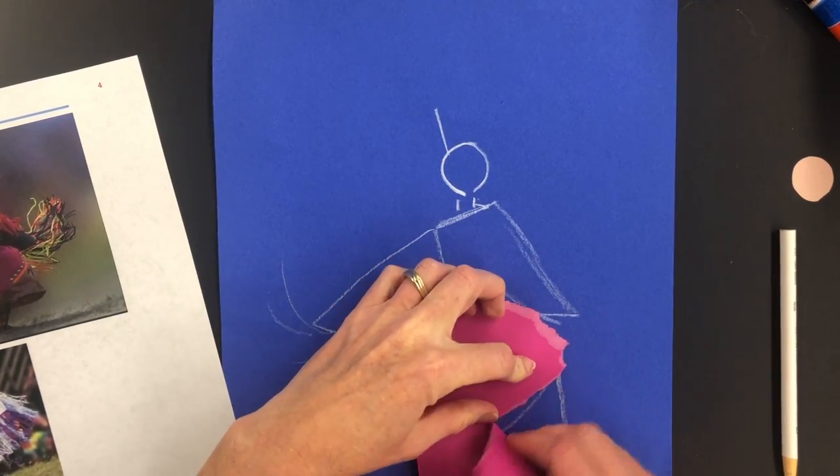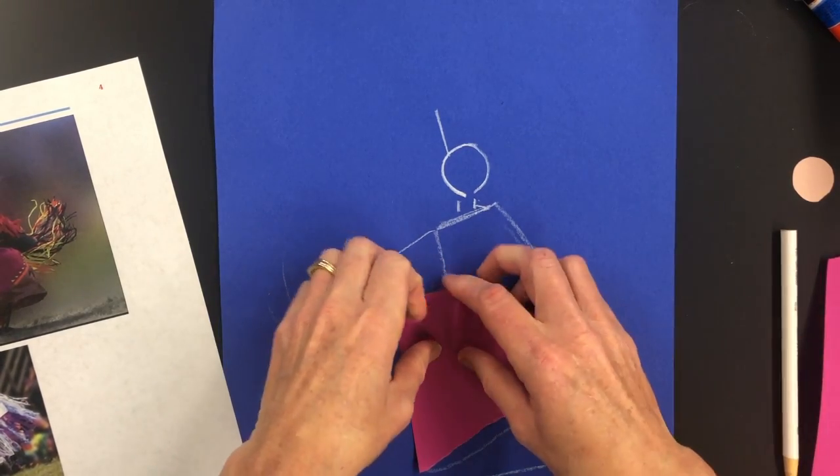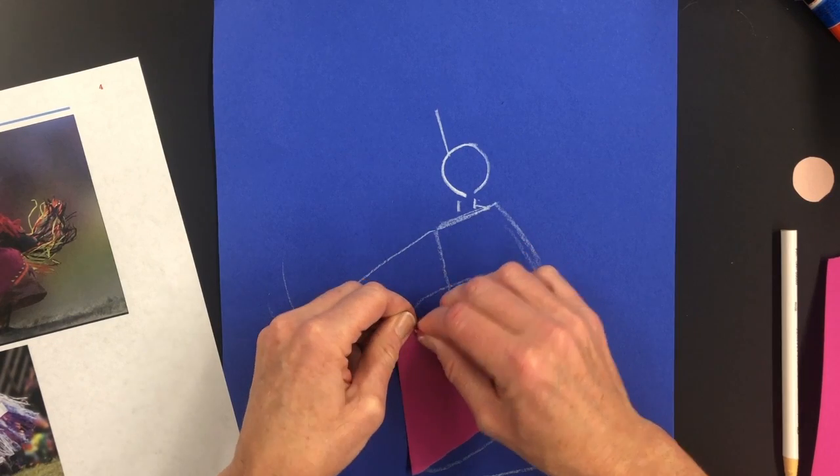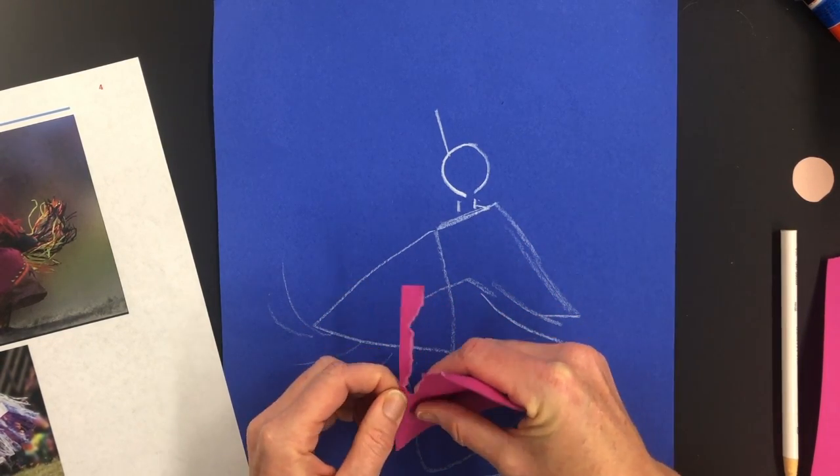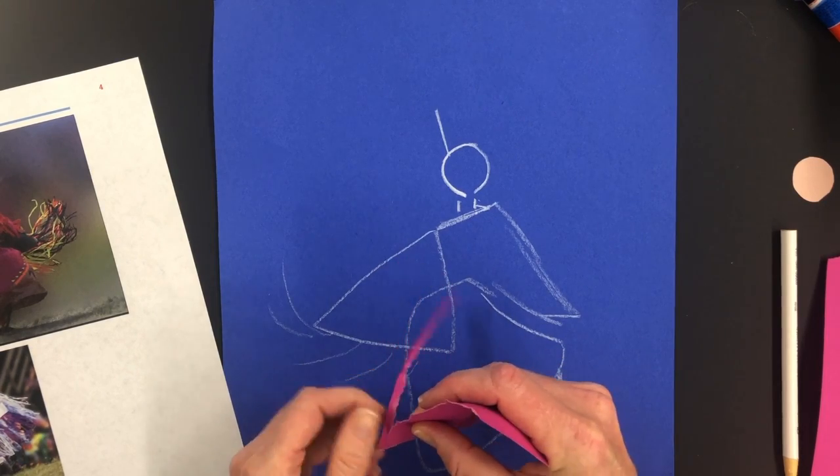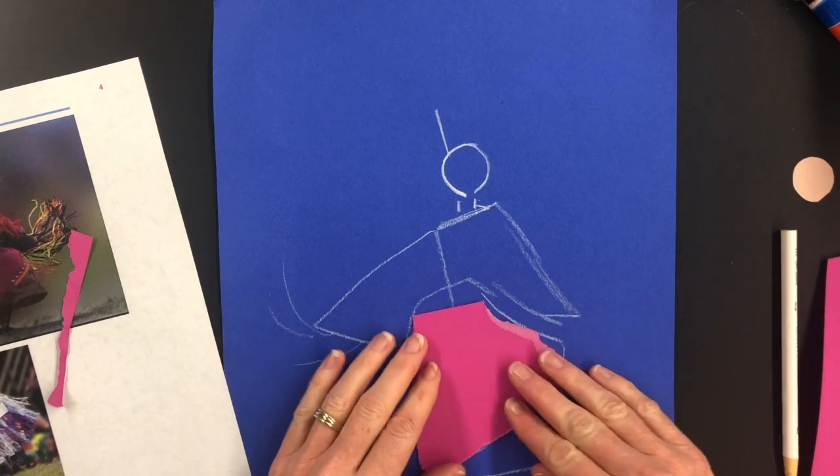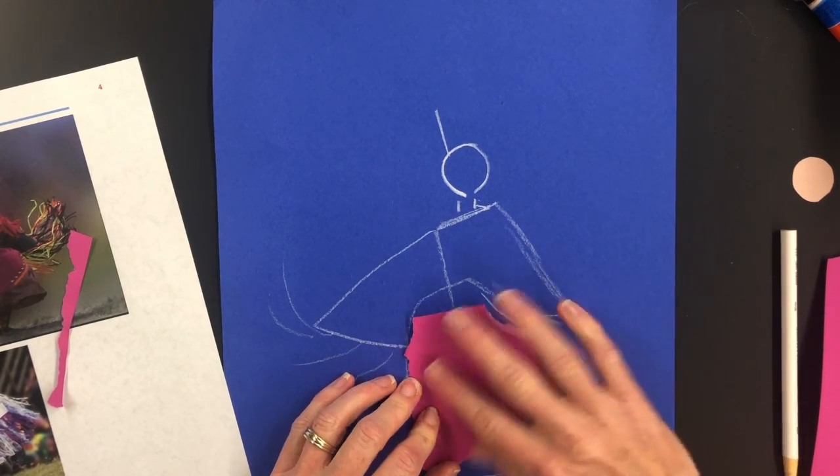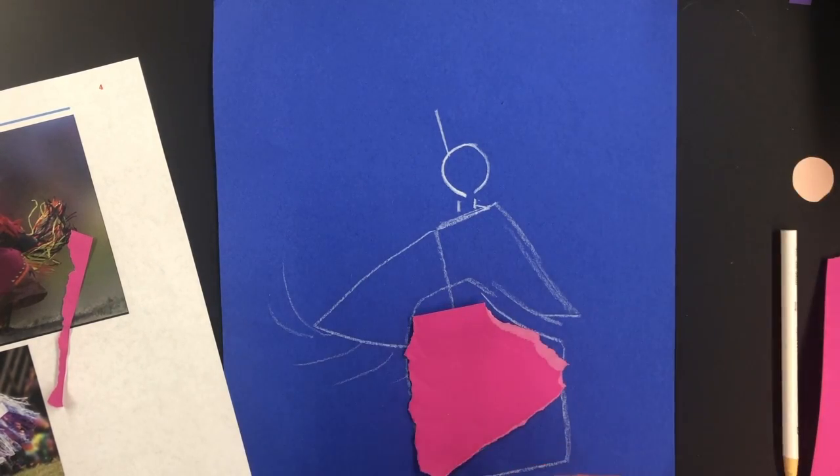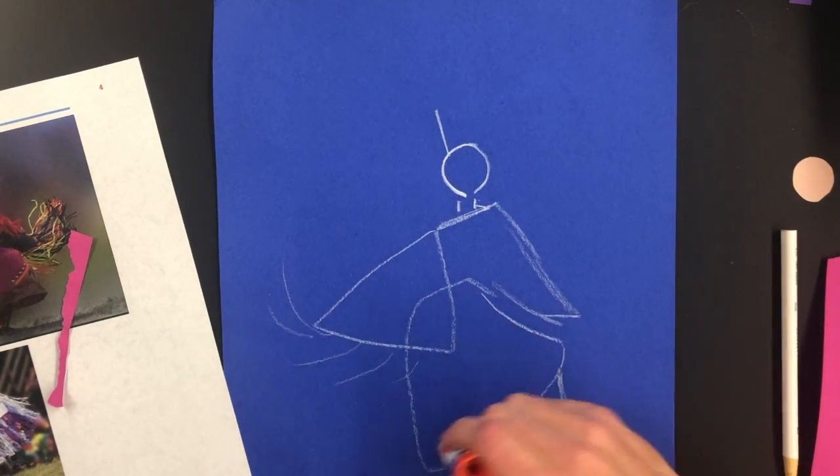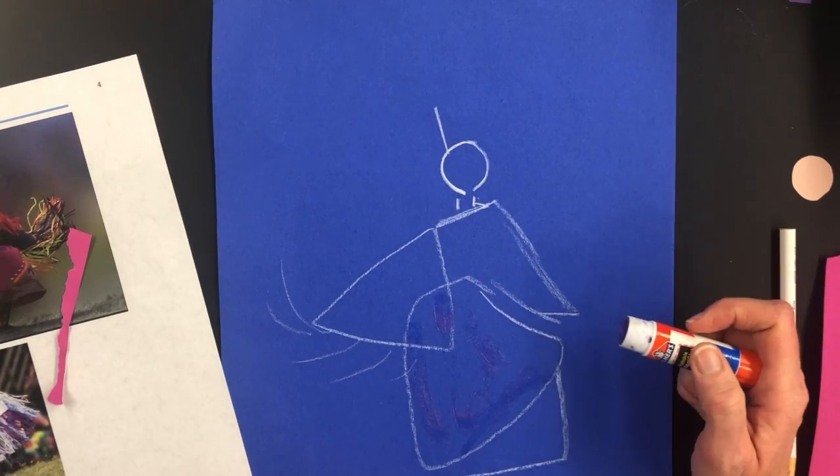That goes there. I'm going to kind of tear it out. And it doesn't have to be perfect. But the tearing is going to make it look like it's moving, it's not going to be so rigid. And I can start gluing down as I go.